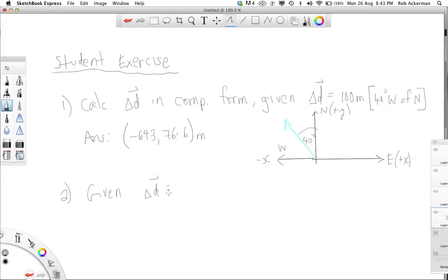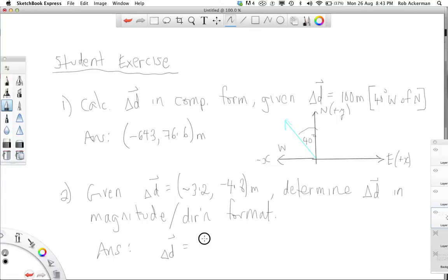Exercise number two. Given a displacement vector of negative 3.2, negative 4.8 meters. In other words, using these components, figure out the magnitude and the direction and write it out. So here I'm not going to give you a diagram like I did up here. That's your job this time. But the answer, and you'll know you understand when you get this, is going to be delta d is 5.8 meters. And the direction is 33.7 degrees west of south.